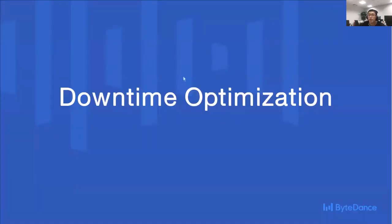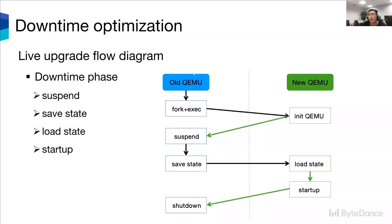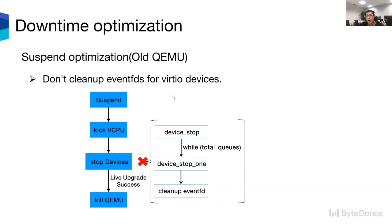Next, I will introduce how to optimize VM downtime during the Live Upgrade. This picture shows the Live Upgrade flow diagram. The first step: we fork a child process and execute the new QEMU binary, and the new QEMU is initialized. The second step: we stop the old QEMU and save the VM state. The last step: the new QEMU loads state from the old QEMU and starts. VM downtime contains the following phases: stopping the old QEMU, saving the old QEMU state, loading state from the old QEMU, and starting the new QEMU.